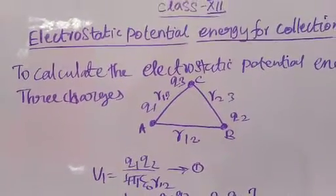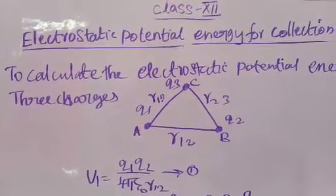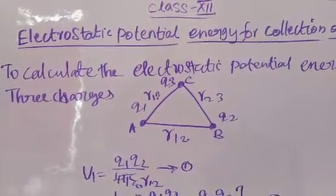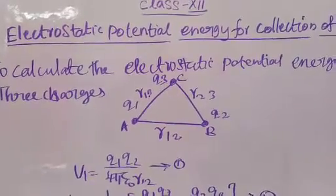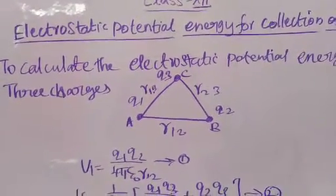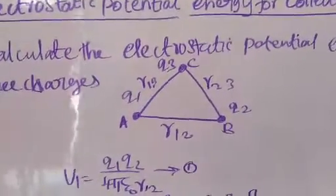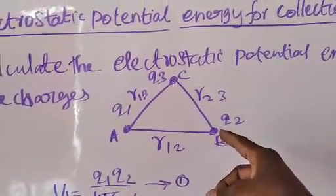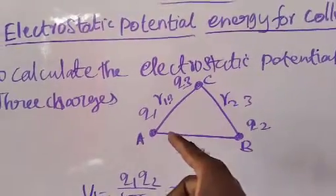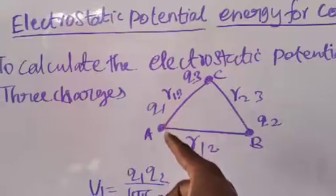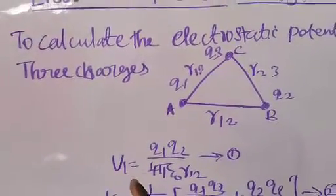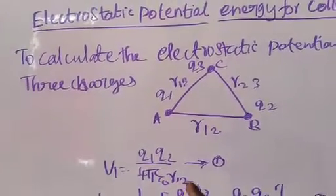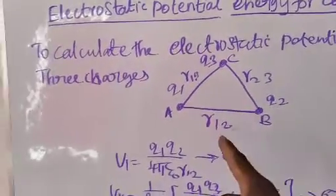Then, charge Q2 is brought from infinity to point B. Work is done. That work done W equal to Q2 into V1B — the charge Q2 is brought from infinity to point B against the electric potential developed by charge Q1, that is V1B. So U1 equal to Q1 Q2 by 4 pi epsilon naught R12, where R12 is the distance between A and B.